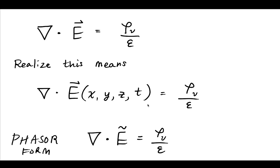then we can just reduce it to a phasor form where we actually are going to just substitute this phasor E field for this instantaneous one. And so we can take the phasor form of Gauss's law to look like the divergence of the phasor electric field is equal to the charge density divided by epsilon.